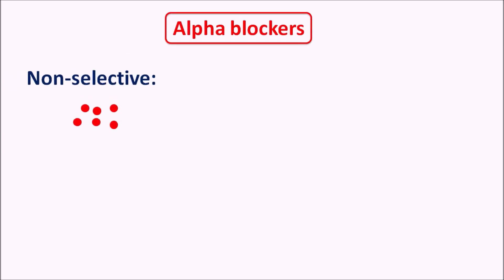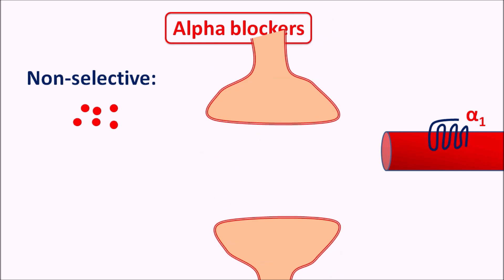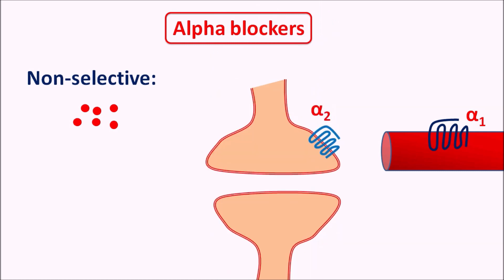Alpha blockers can be classified as non-selective alpha blockers as well as selective alpha blockers. Non-selective alpha blockers can act on the alpha 1 receptors which are expressed on various types of smooth muscles including vascular smooth muscle. Similarly, they can block the alpha 2 receptors which are presynaptic in nature, which inhibit the release of neurotransmitters.